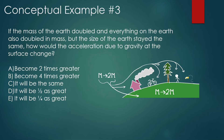If the mass of the Earth doubled, and everything on the Earth also doubled in mass, but the size of the Earth stayed the same, how would the acceleration due to gravity at the surface change? A person on Earth currently experiences about 10 m/s² acceleration due to gravity. Now the Earth doubles in mass, size stays the same, so it's twice as massive and a lot more dense. The person also becomes twice as massive.